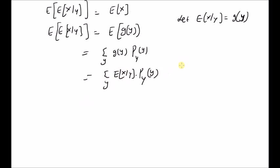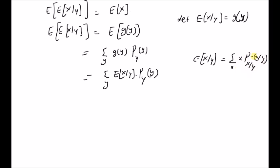But by definition, the conditional expectation of X given Y is given by the summation over x of x times the conditional probability mass function p_{X|Y}(x|y). So this is the definition of the conditional expectation.